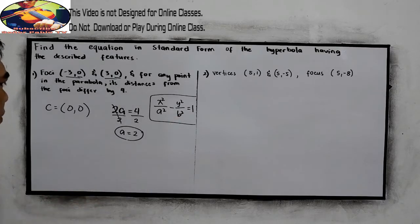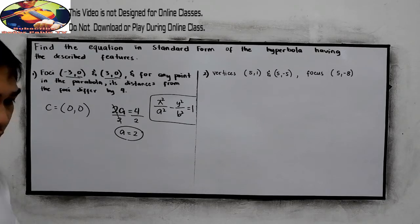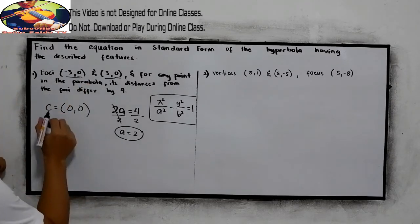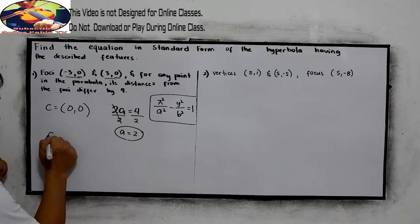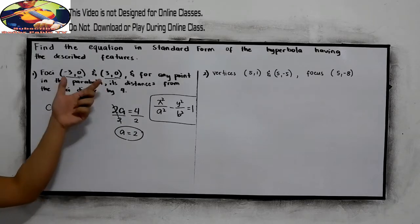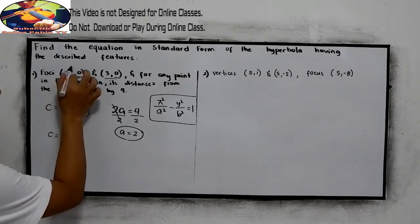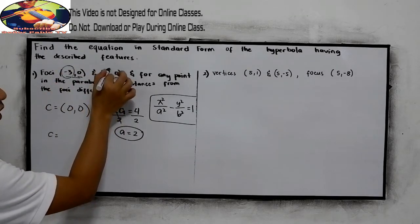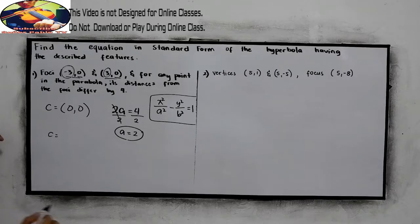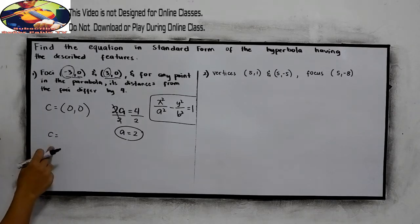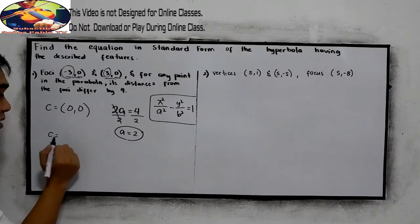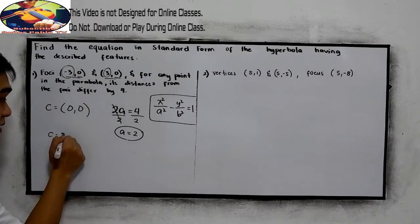So let's find first the value of c. Looking at the given, our foci coordinates show that c is negative 3 and positive 3. That means this is the distance of c. Since c is a distance, we just take the positive value, so c equals 3.